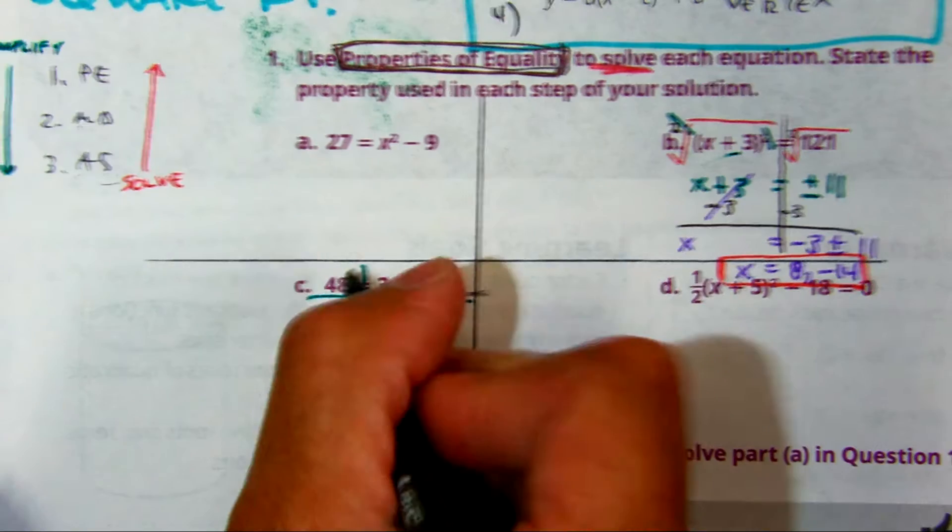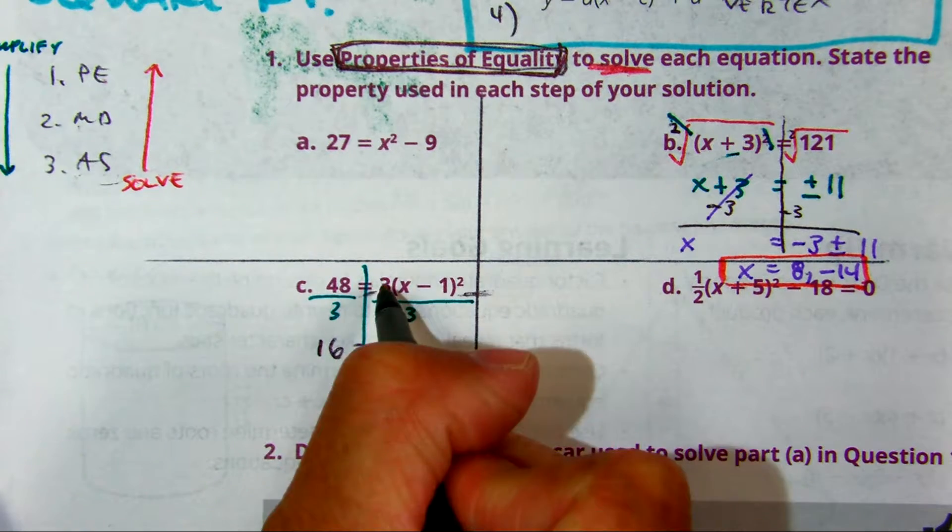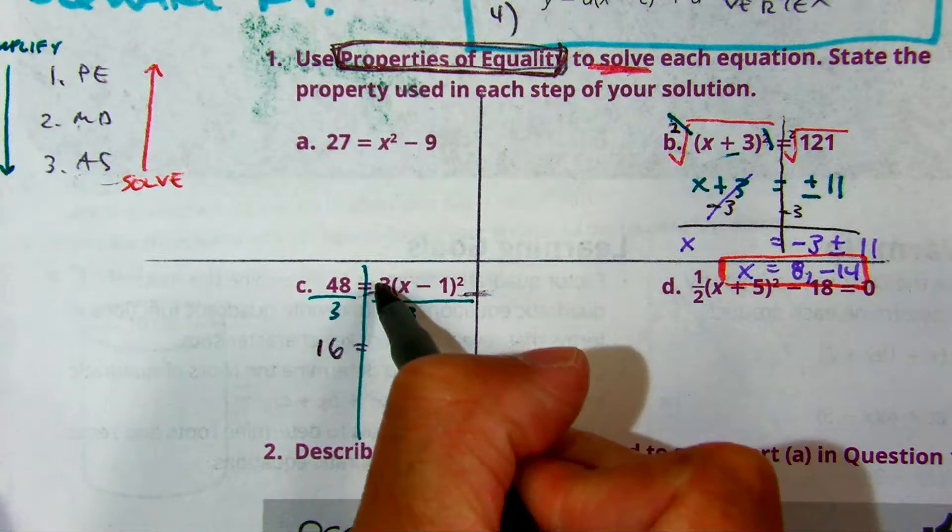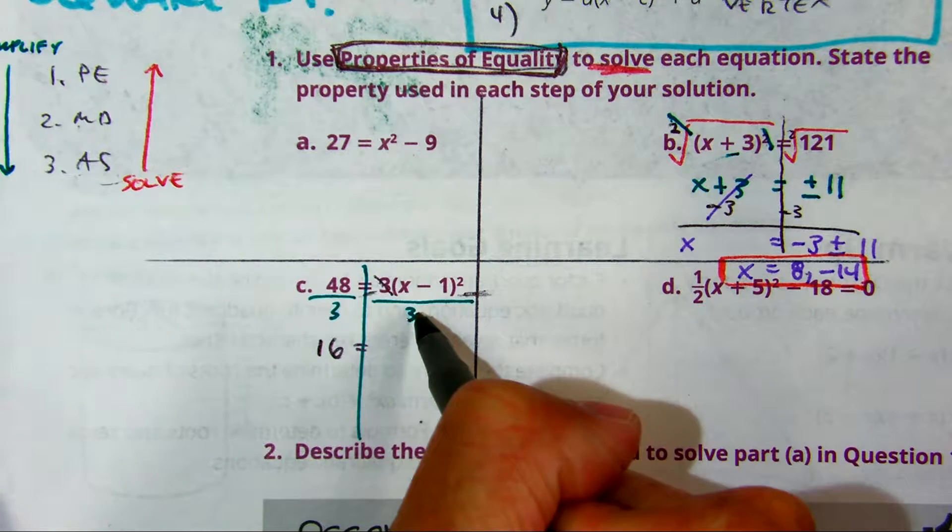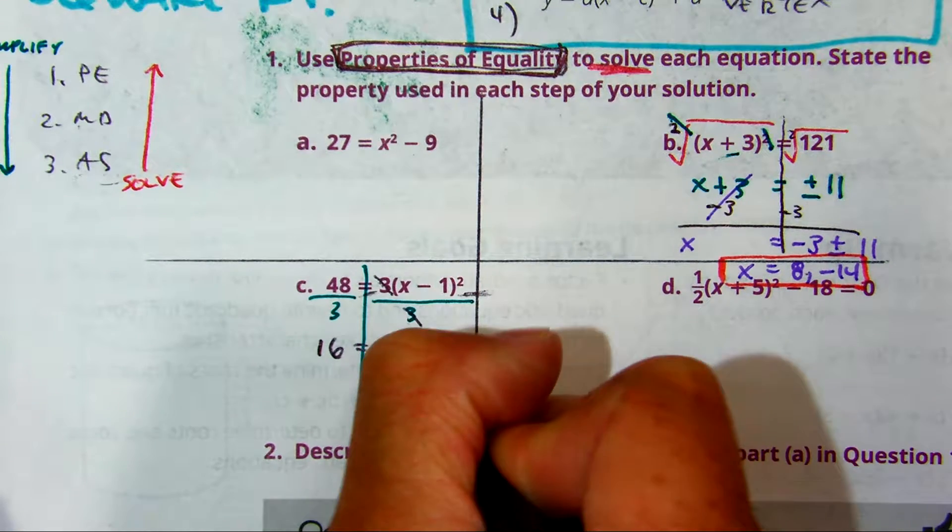Class, 48 divided by 3? 16. Class, I'm canceling here. What does canceling equal? 1. So I'm left with just x minus 1, parentheses squared.